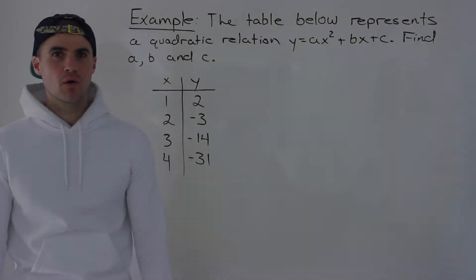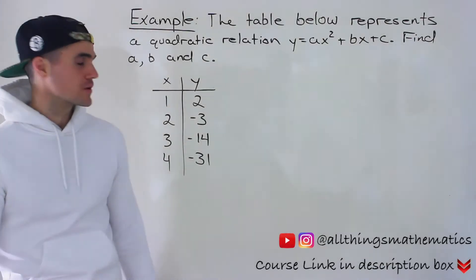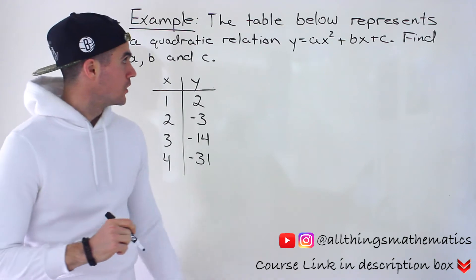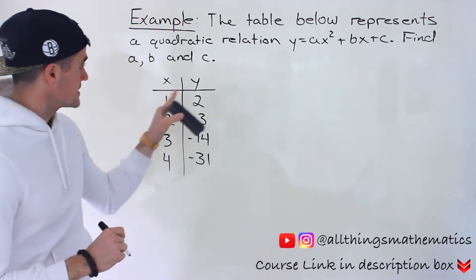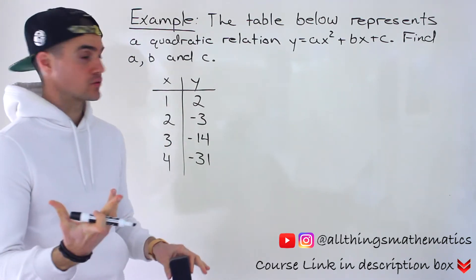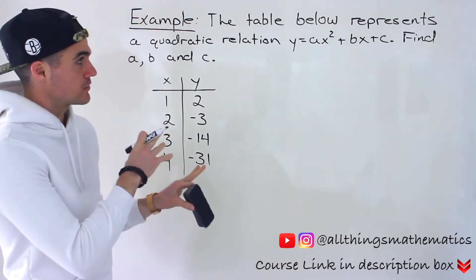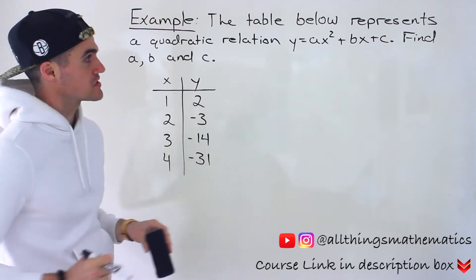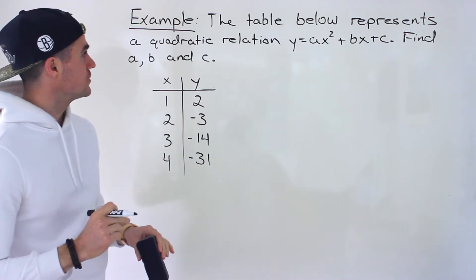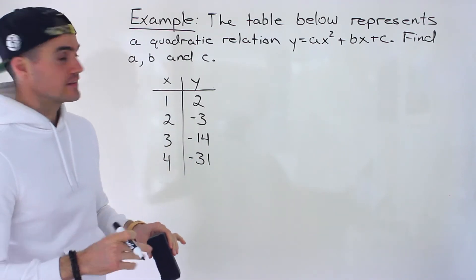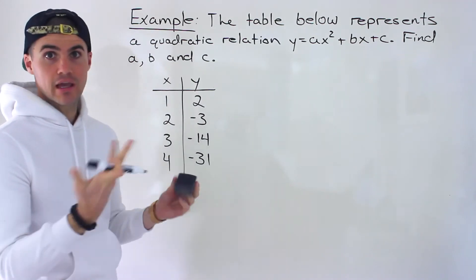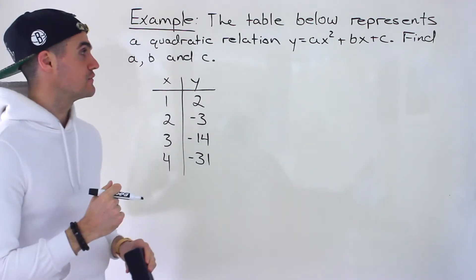What's up everyone? Patrick here. Welcome back. Moving on to another question dealing with quadratic relations. We're told that the table below represents a quadratic relation, so y equals ax squared plus bx plus c, and what we have to do is find the actual quadratic — the a, b, and c values.